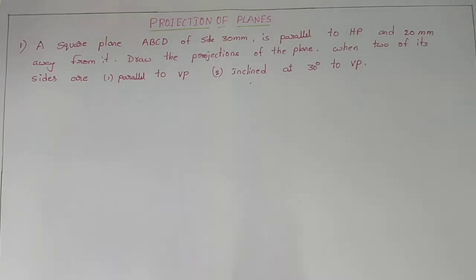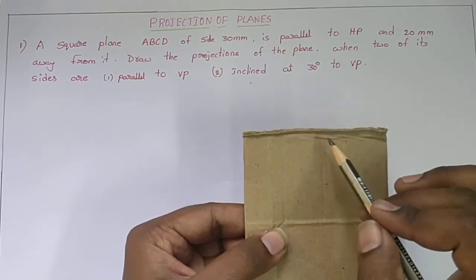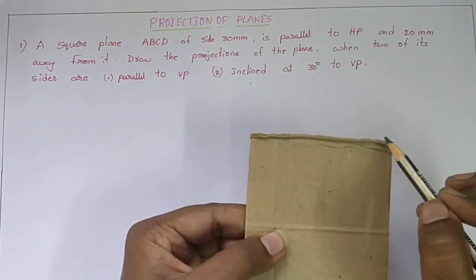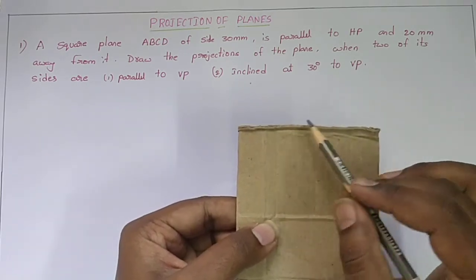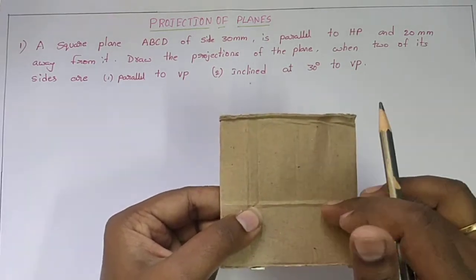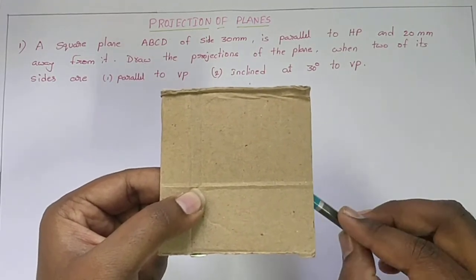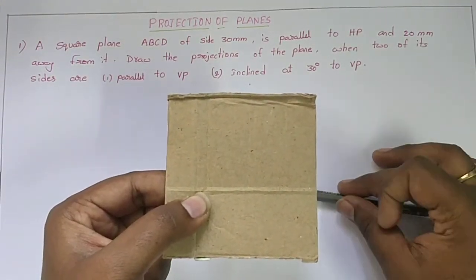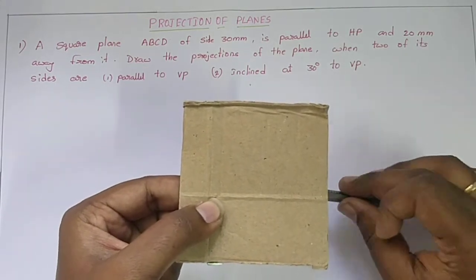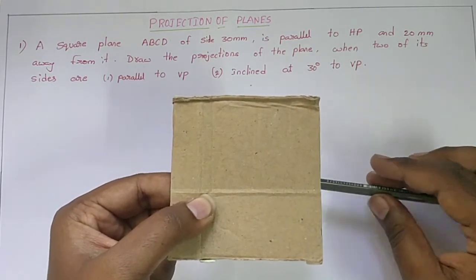First we need to take one square plane. Consider it is a square plane having dimensions 30 mm square — that means four sides are equal. The condition given is that it is parallel to HP, so we have to place it parallel to HP and 20 mm away from it. That means the distance from the horizontal plane to this surface is 20 mm.